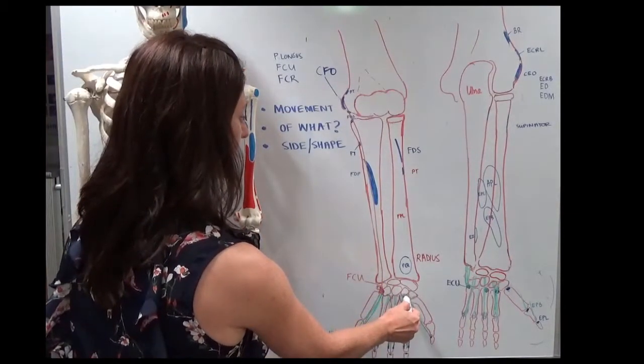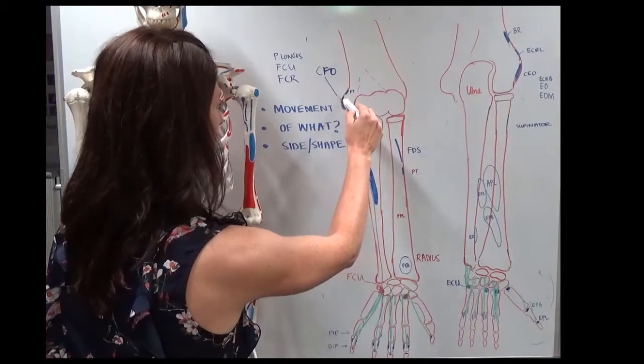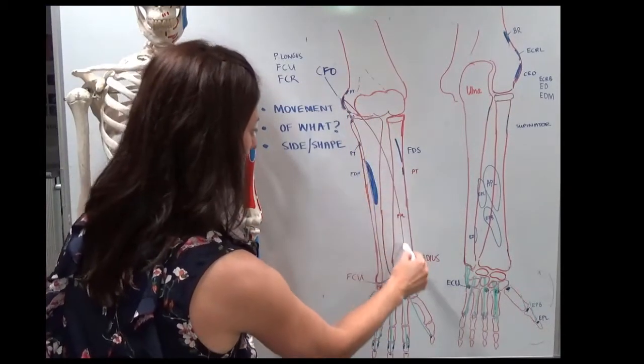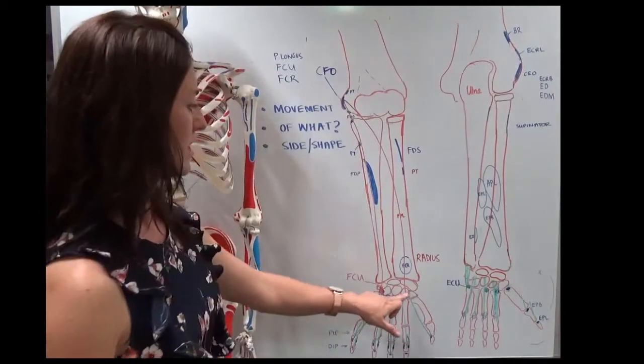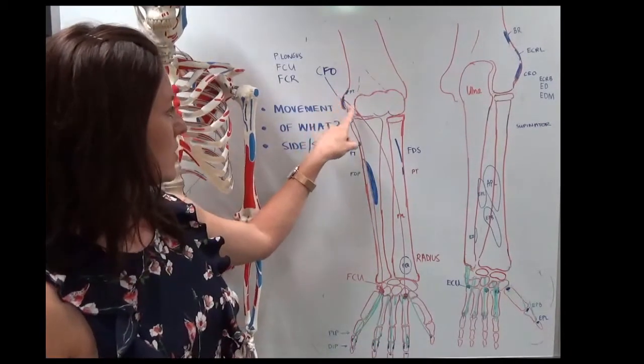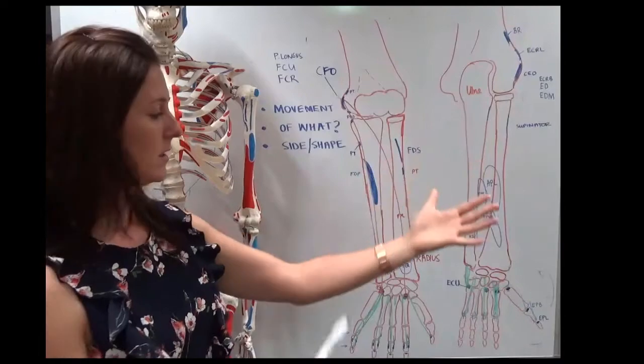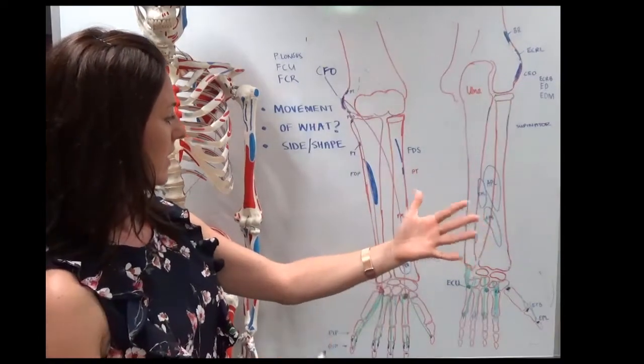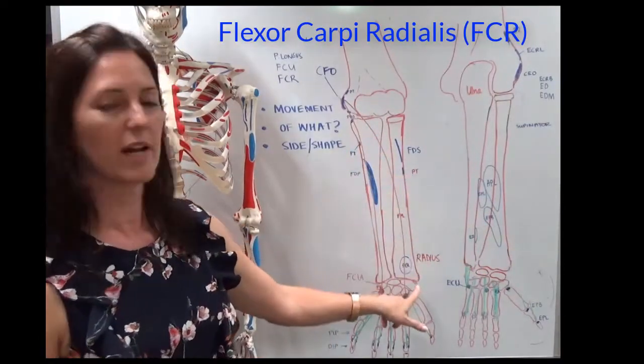Mirror that over to the other side. We're going to originate on the medial epicondyle and come down there to the base of the second metacarpal. And this is your movement, flexor, carpi, and then radialis, because it's on the radial side.